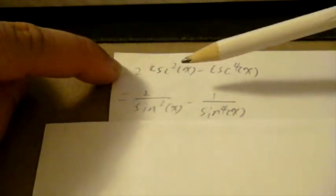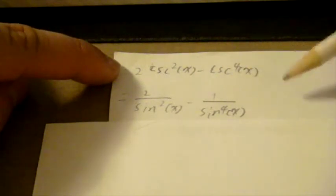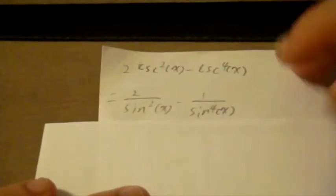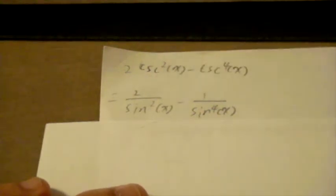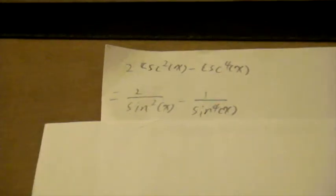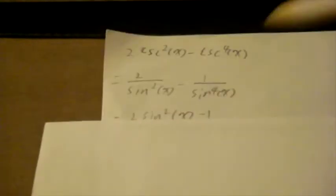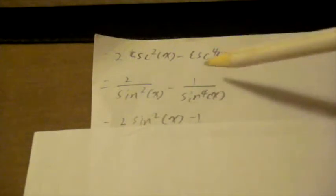Okay guys, we just finished the left part and now I'm going to do the right part. Our right part is 2 cosecant squared x minus cosecant to the 4th x. In case you don't know, cosecant also equals one over sine — that's one of our basic six trig identities you need to memorize. So it becomes two over sine squared x minus one over sine to the 4th x.